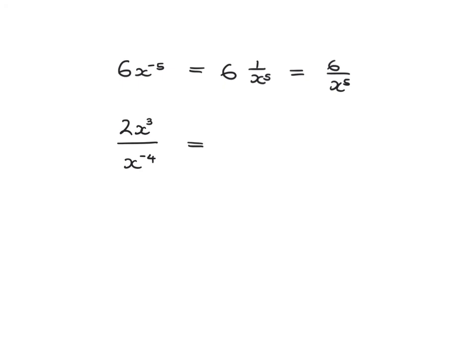For the next one, we've got 2x squared at the top of the fraction, and x to the minus 4 at the bottom. Remember, if it's at the bottom and it's a negative it's going to invert and come up to the top and become x to the 4. Then we combine these using our rules: x squared times x to the 4 means you add the exponents, giving you 2x to the power of 7.